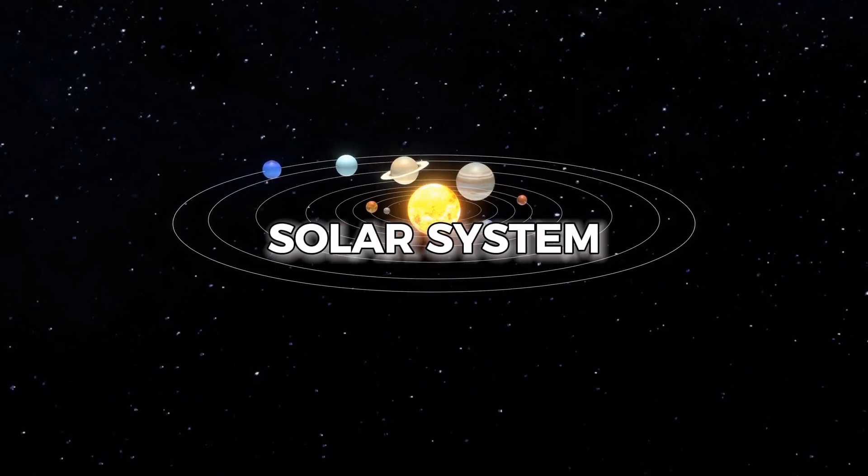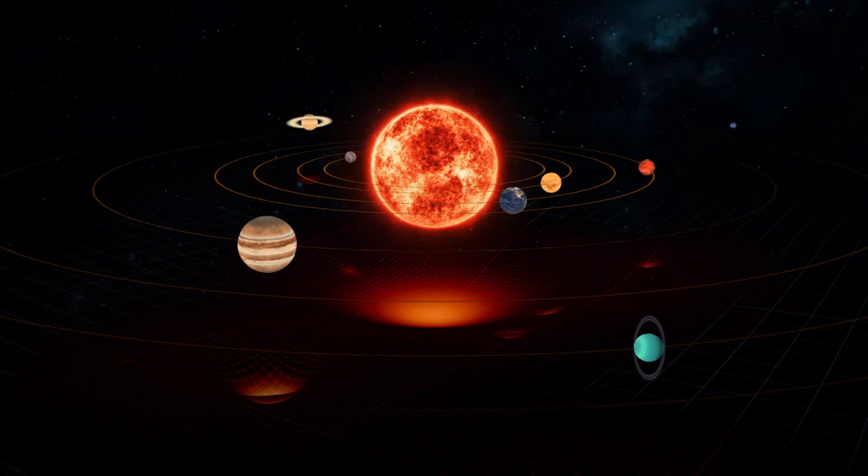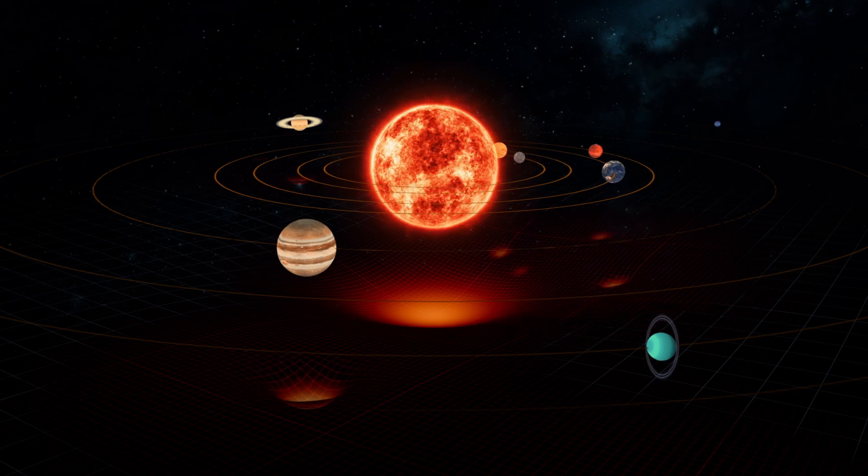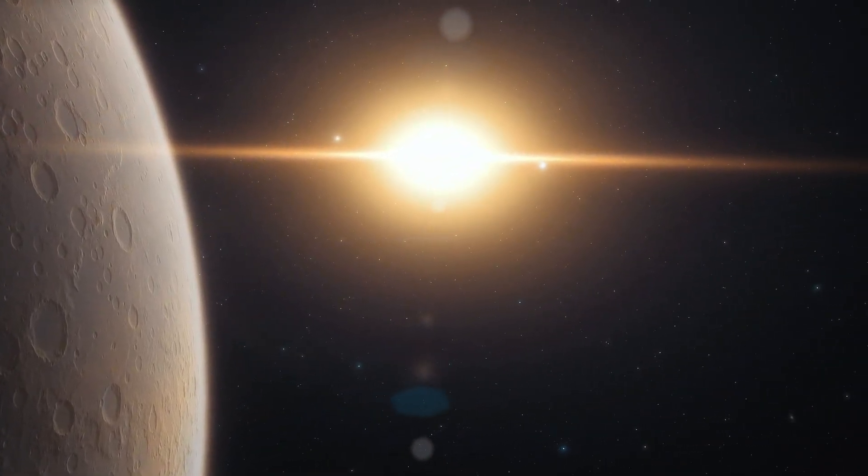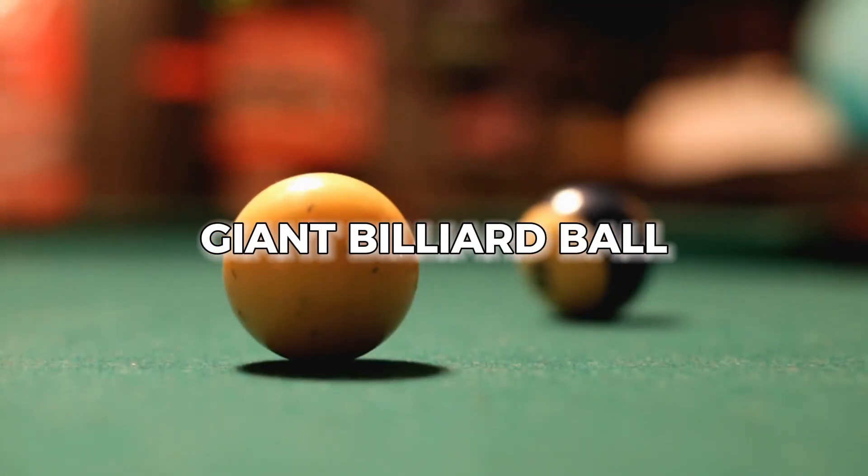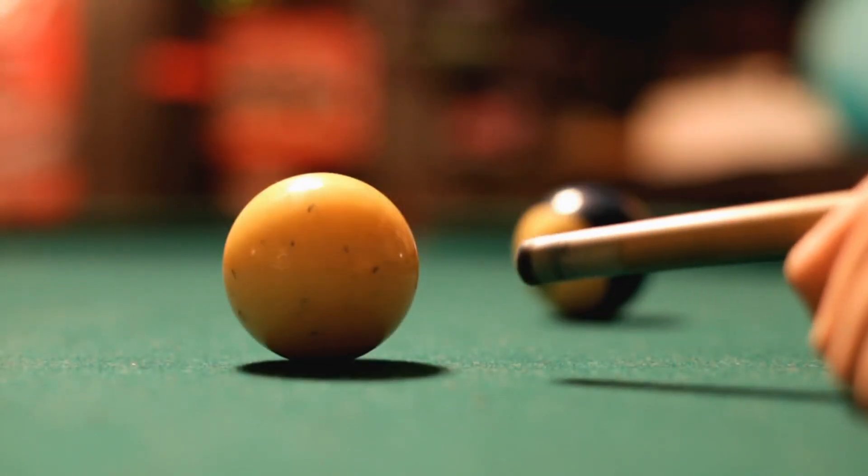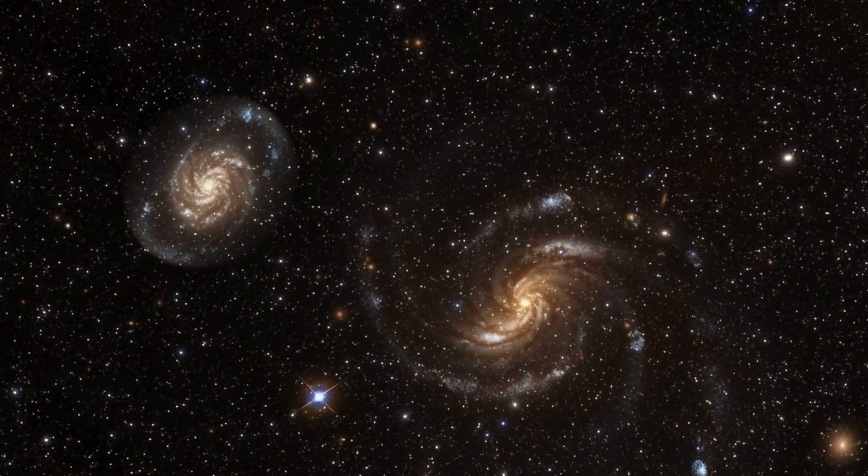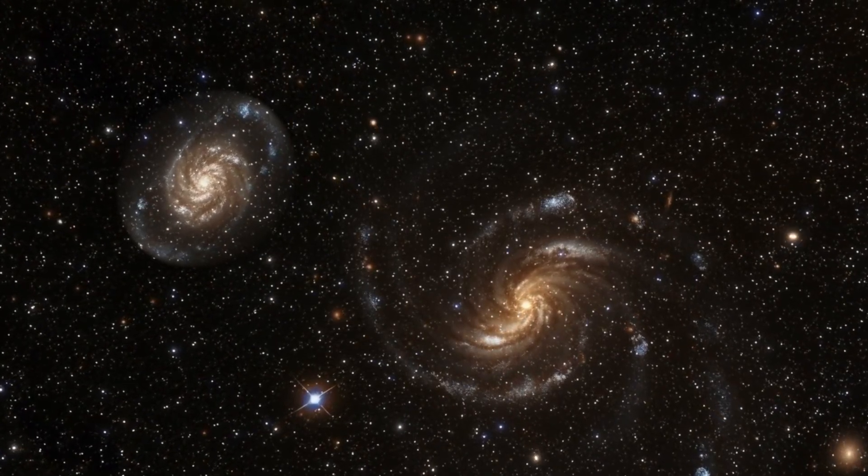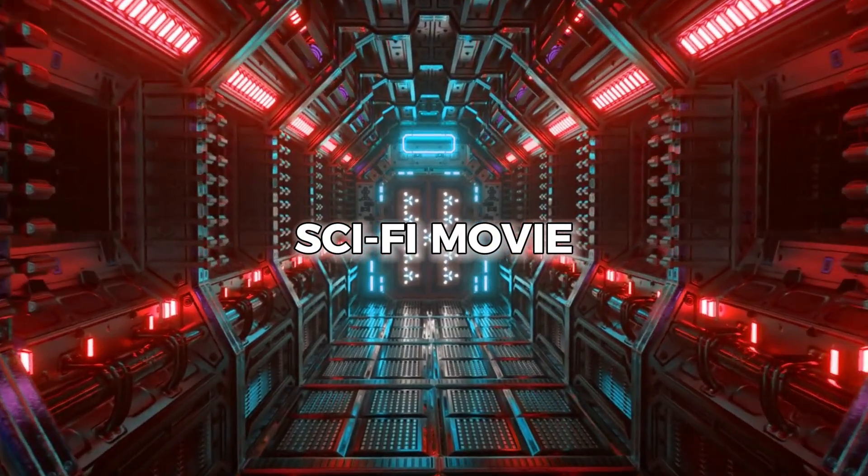Now picture our solar system. Everything's cruising along smoothly when suddenly, bam, a massive object barges in, throwing everything out of whack. It's like a giant billiard ball crashing into the game. Can you imagine the chances of not one but two planets getting knocked off course and spinning off into space together? Sounds like something out of a sci-fi movie, right?